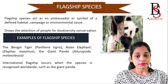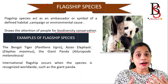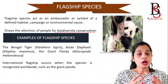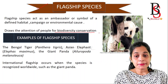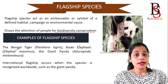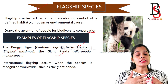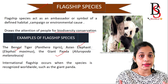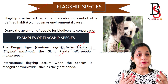Flagship species attract the attention of people and raise concern about the conservation of biodiversity. Examples of flagship species are the Bengal tiger, Asian elephant, and the giant panda. International flagship species are recognized worldwide — for example, the giant panda is a worldwide flagship species.